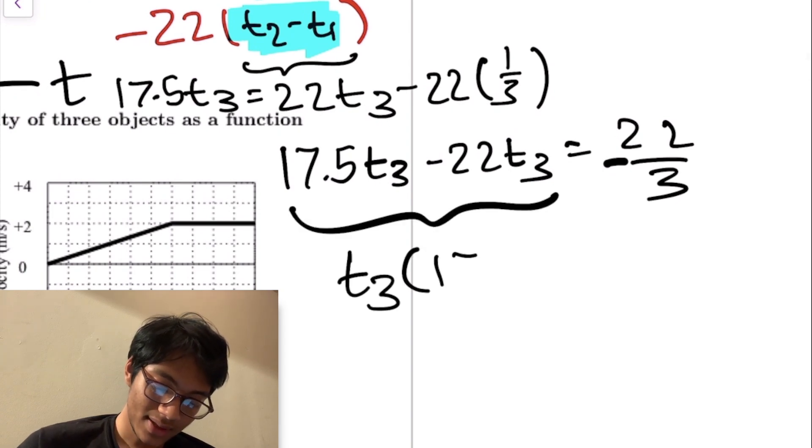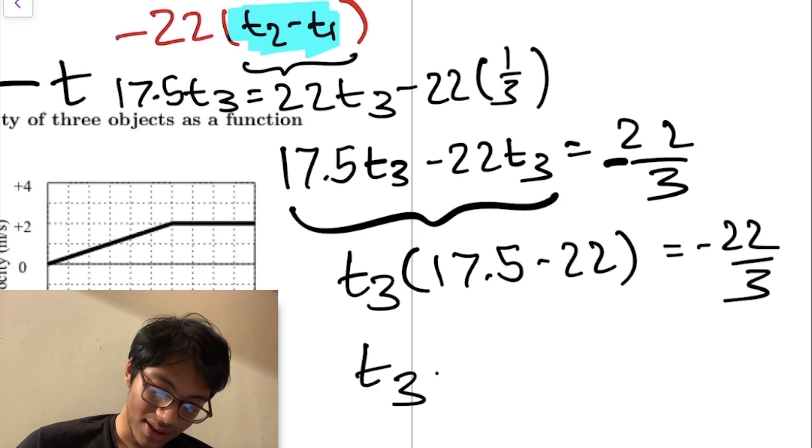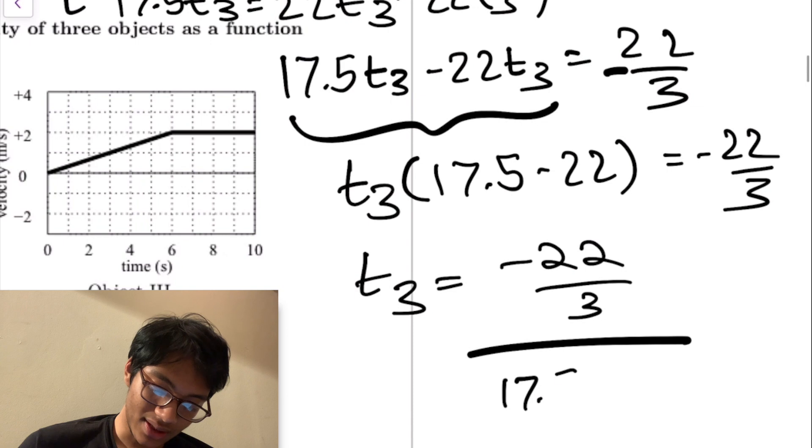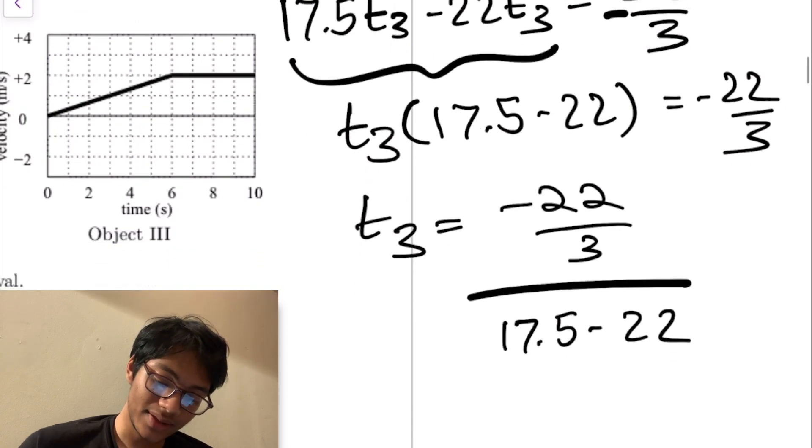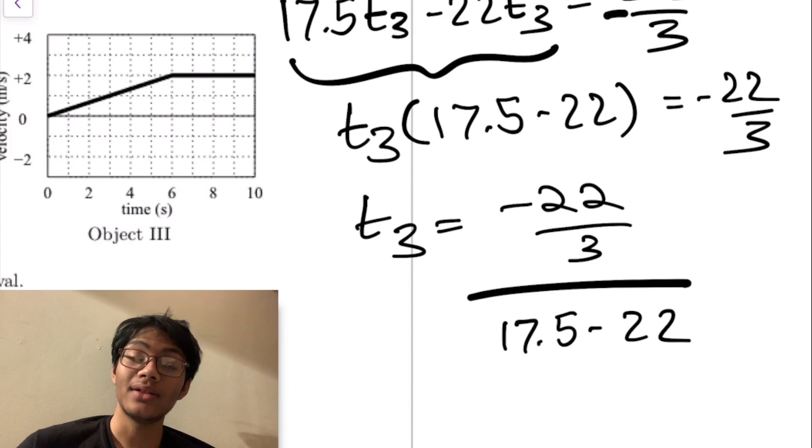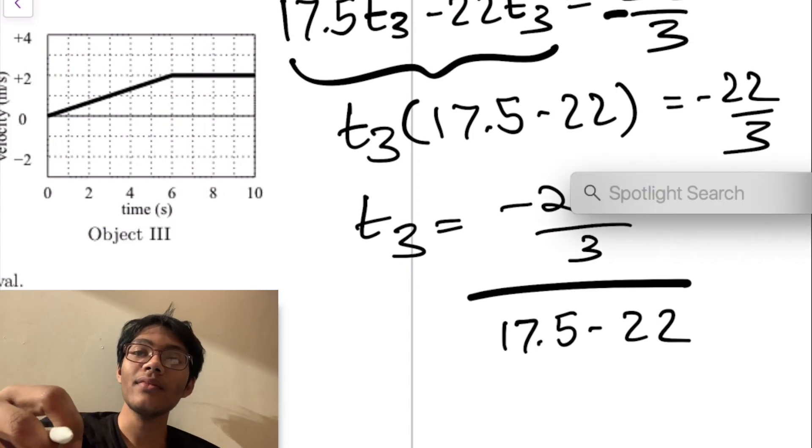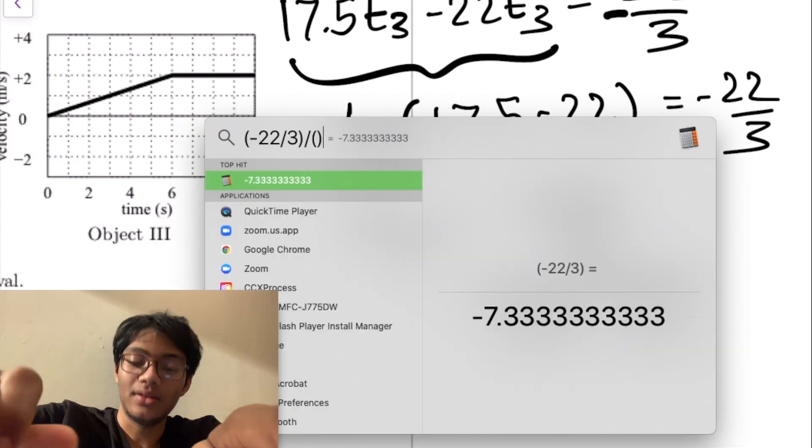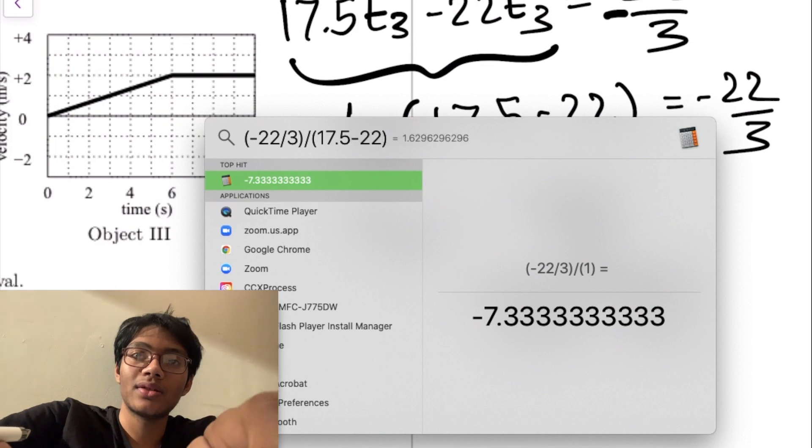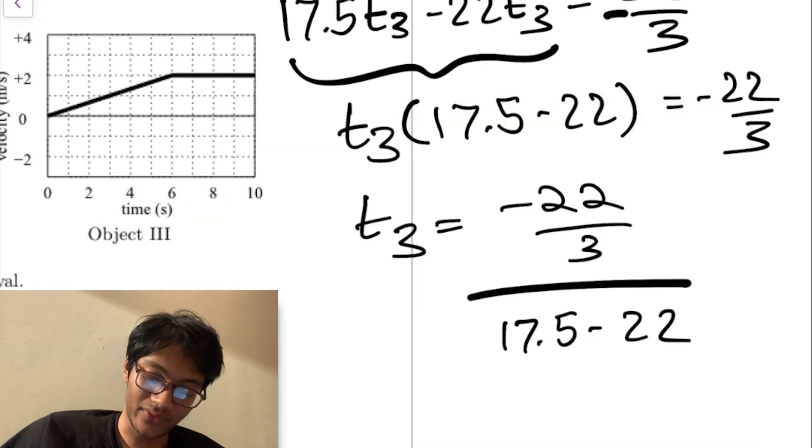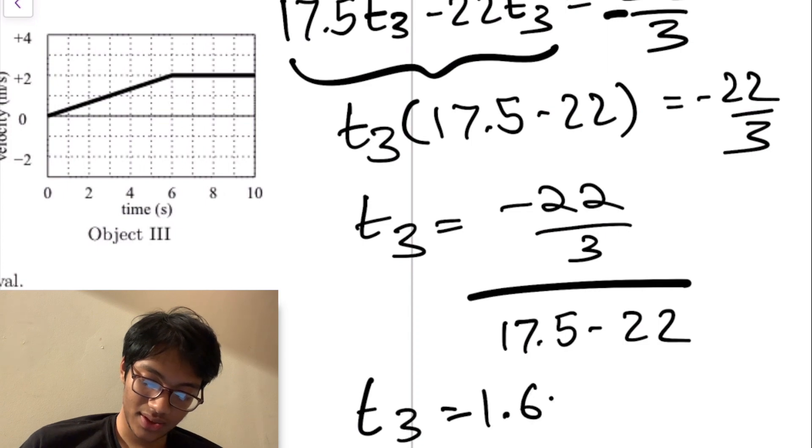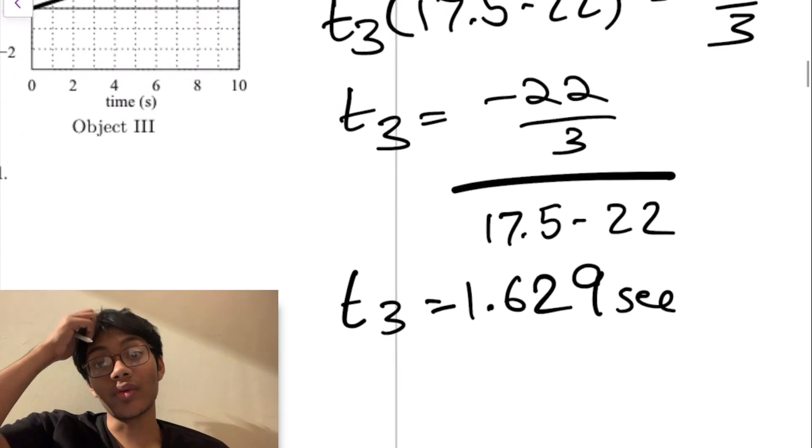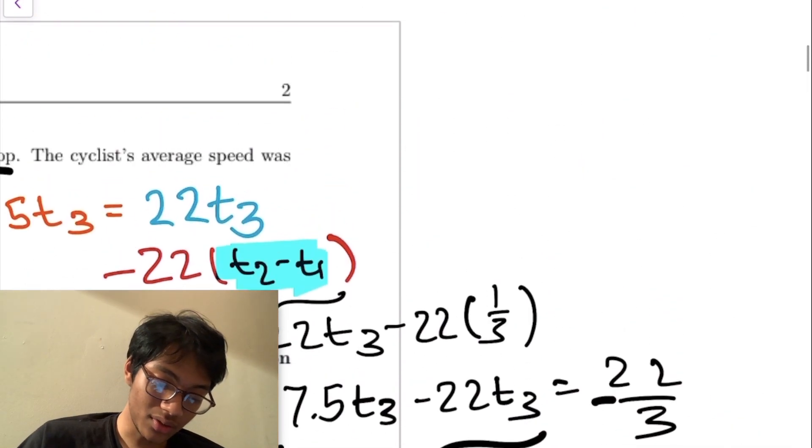Let's factor out the t3. 17.5 minus 22 equals minus 22 over 3. So t3 is going to be negative 22 over 3 divided by 17.5 minus 22. We can use a calculator. Let me show you what this looks like: minus 22 over 3 divided by 17.5 minus 22, that gives us 1.629 for t3.